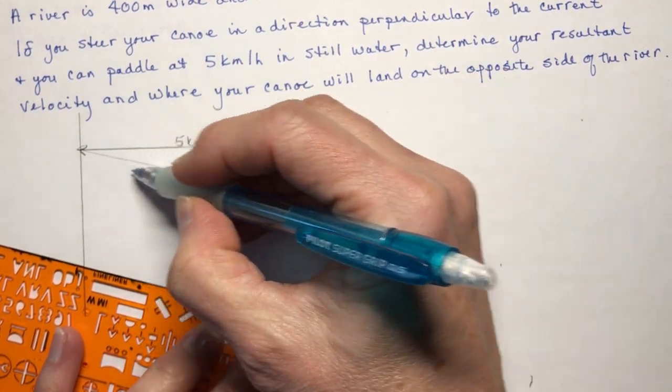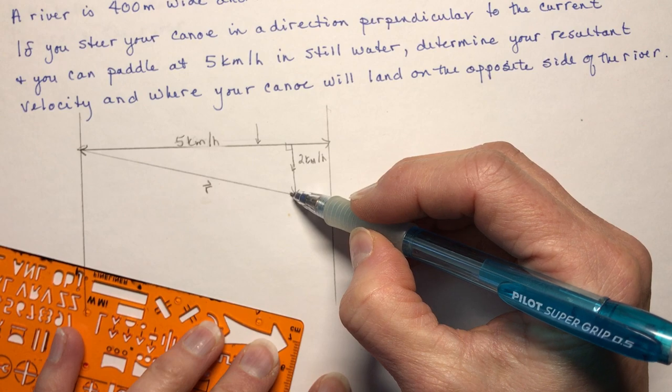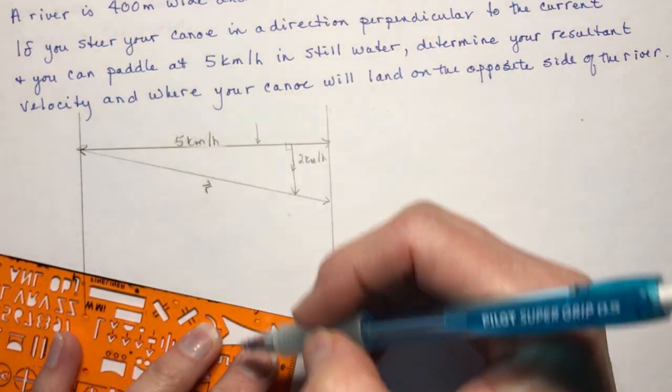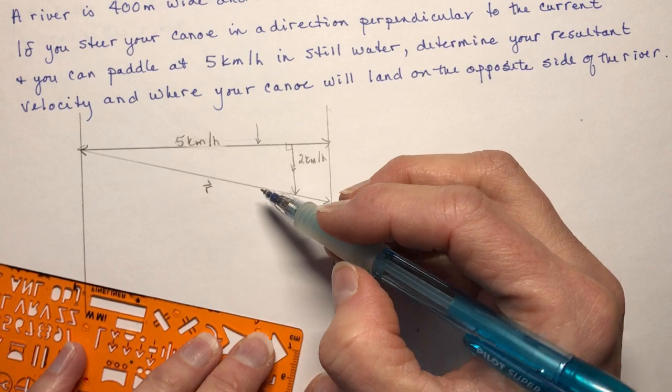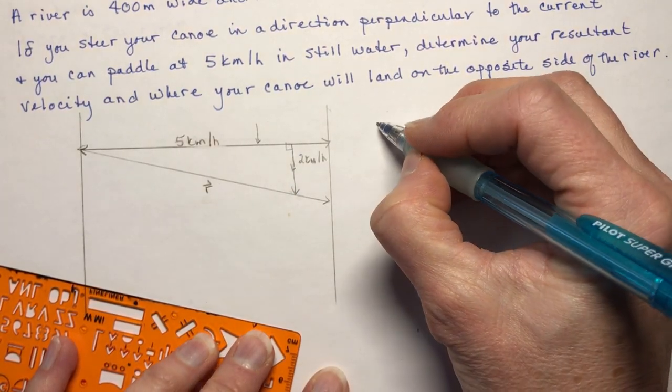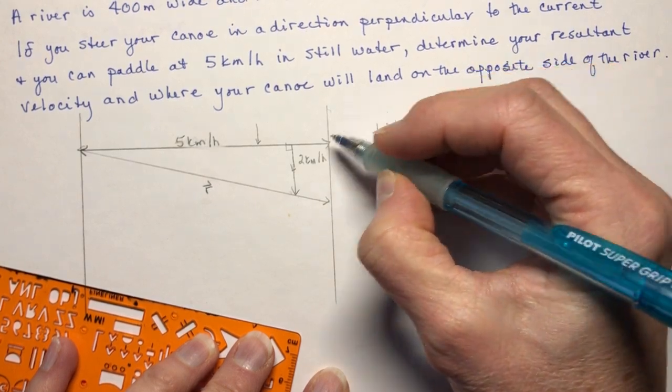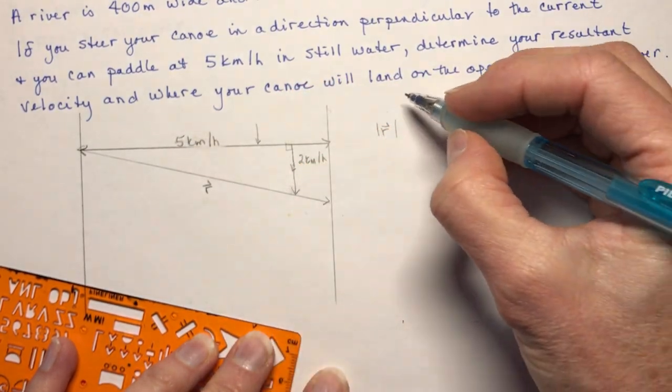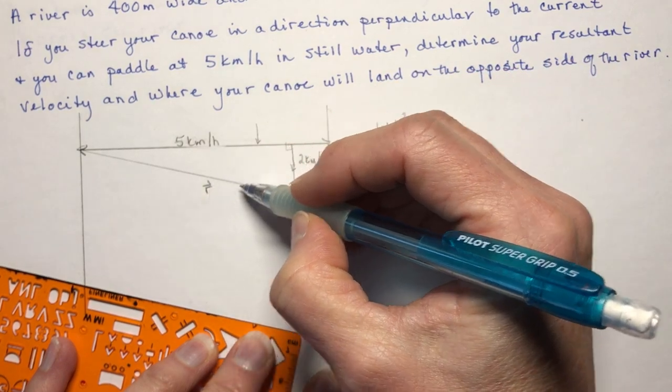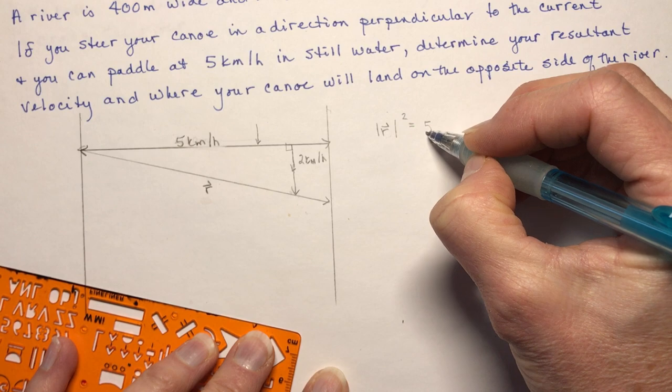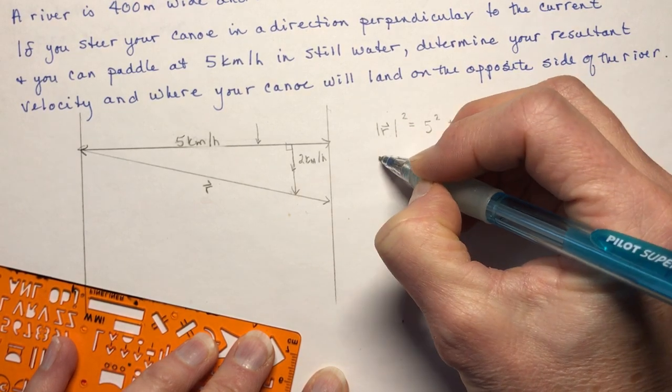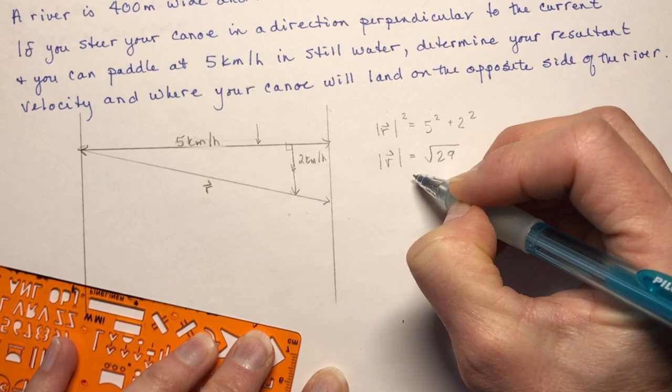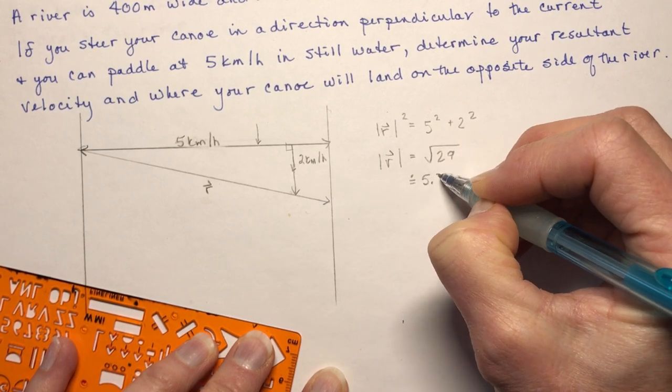Now, as you can see, this resultant is a hypotenuse, which means I'm going to go faster. Just like I said, the water is pushing you. So the first thing they want to know is what is your resultant velocity. Okay, so my resultant velocity is I'm going to use Pythagorean theorem here. That's all I need because I have five, I have two, and I'm trying to find R. So R squared, which is the hypotenuse. Make sure you know which one is hypotenuse so you're not adding when you should be subtracting. So five squared plus two squared. So the resultant velocity is the square root of 29, which is approximately 5.39 kilometers per hour.